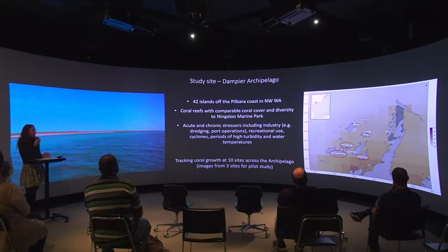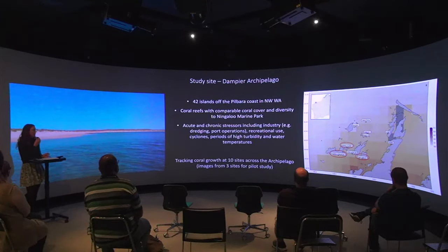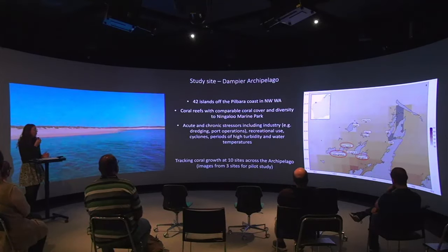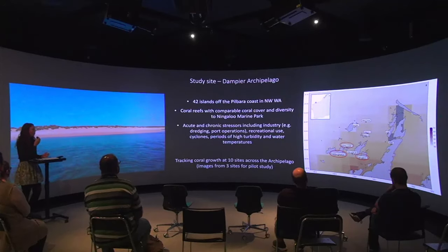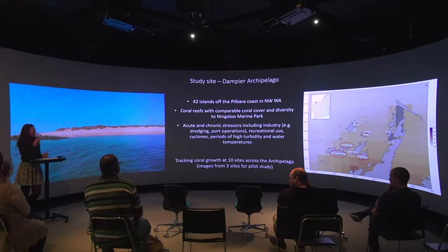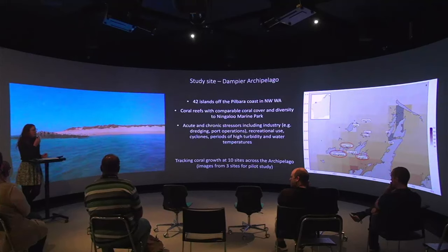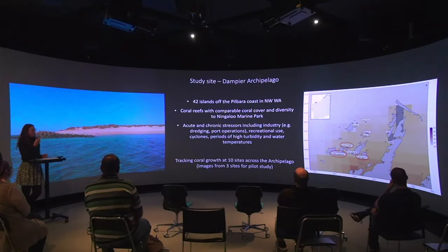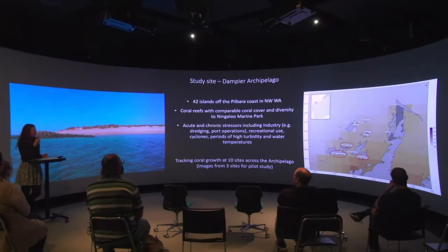The reefs of the Dampier Archipelago have comparable coral cover and diversity to the Ningaloo Marine Park, located about 300 kilometres south. The coral reefs of the Dampier Archipelago have shown resilience to acute and chronic stresses, including from industry — for example, from dredging, port operations — intensive recreational use, and also cyclones, periods of high turbidity, and anomalous periods of high water temperatures. However, the coral cover doesn't necessarily follow the expected environmental patterns, and so that's why we're interested in delving deeper into what is driving that resilience.